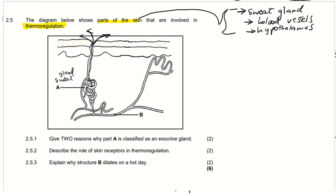B has to be the blood vessels. The hypothalamus is the commander — it is the one that makes this whole process possible and sends out the commands — but the parts that are actually acting are these parts of the skin involved in thermoregulation.